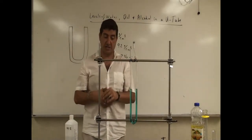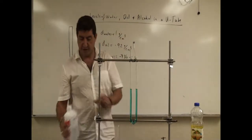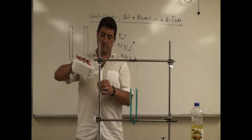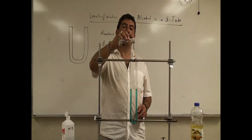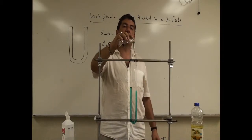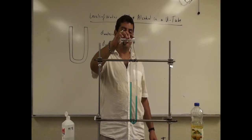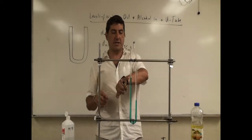Let's take about 25 cc's — 25 cubic centimeters — of alcohol. You'll notice it mainly sits on top of the water because it is less dense. See how the levels are adjusting. The water level is here, the alcohol level is here, and the other water level is there.